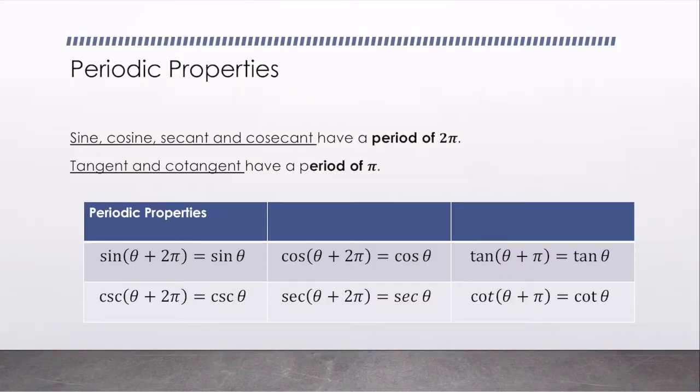Sine of theta is the same as sine of theta plus 2π. Cosecant of theta plus 2π is the same as cosecant of theta. Cosine of theta plus 2π is the same as cosine of theta. Secant of theta plus 2π is the same as secant theta. Tangent of theta plus π is the same as tangent theta, and cotangent of theta plus π is cotangent of theta.